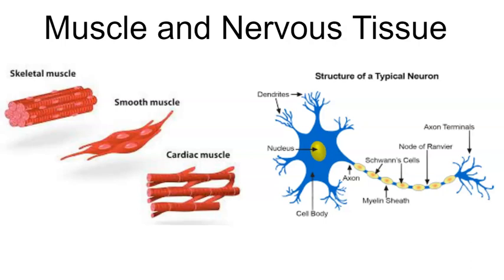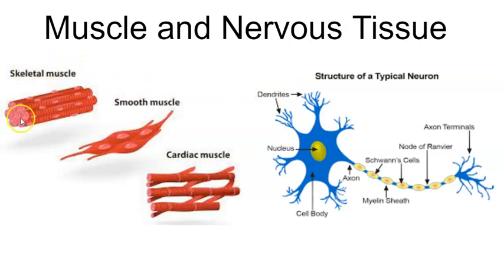In this video, we're going to study the last two tissue types: muscle tissue and nervous tissue — you can also call it neural tissue or nerve tissue. There are three different types of muscle tissue, and we'll also do a brief discussion of nervous tissue.